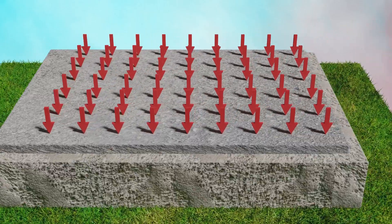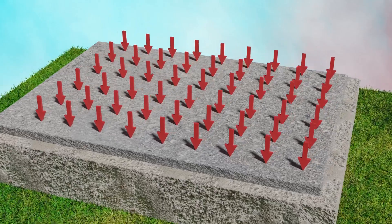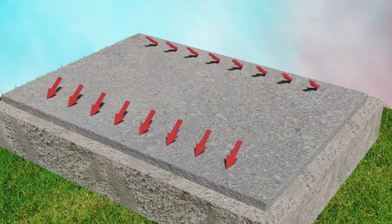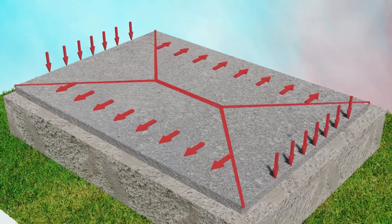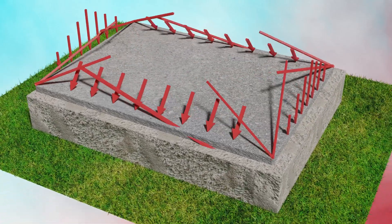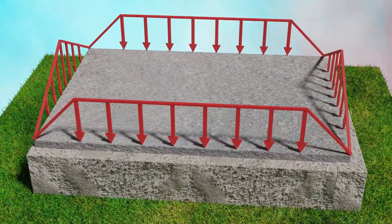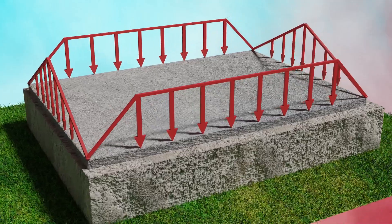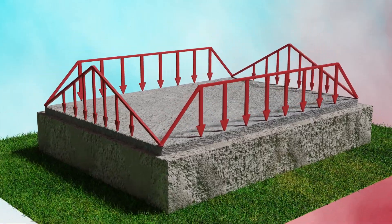As well as two-way slab, where load distribution is such that the longer length receives trapezoidal load while the shorter length receives triangular load.